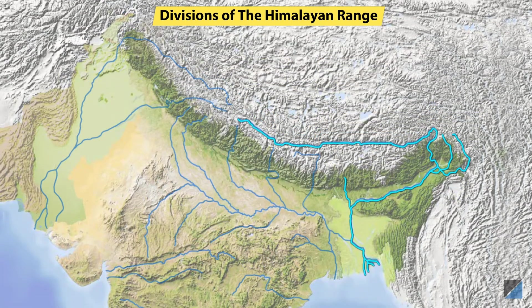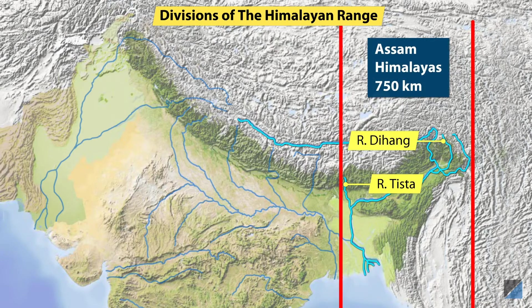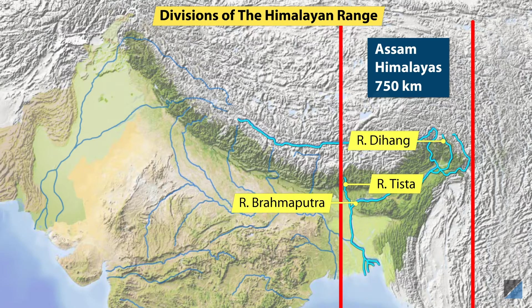The easternmost demarcation lies between the Tista and Dihang rivers and is known as the Assam Himalayas. It covers a distance of about 750 km. The Brahmaputra marks the easternmost boundary of the Himalayas.